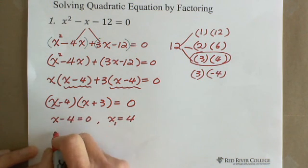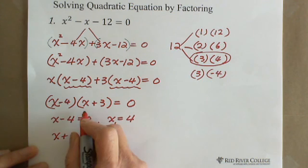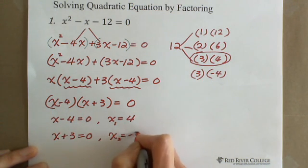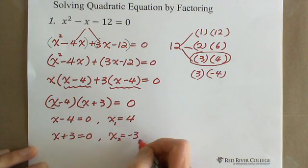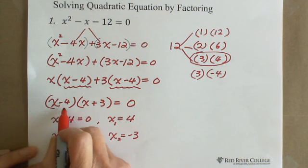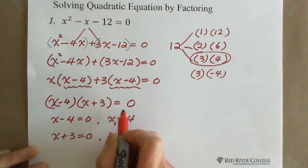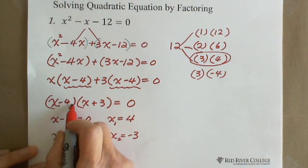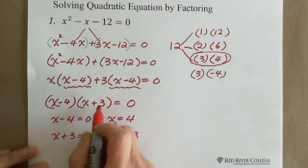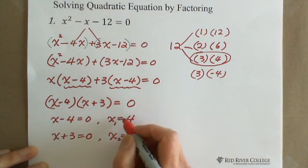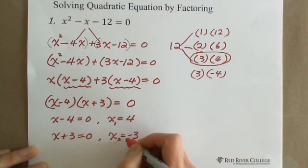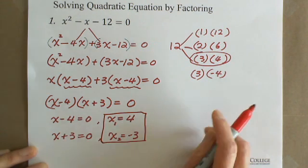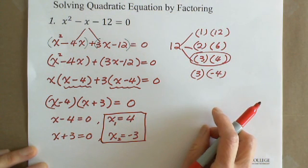The other factor gives us x plus 3 equals 0, so x equals negative 3. We can verify: negative 3 plus 3 equals 0, and negative 3 minus 4 equals negative 7. Negative 7 multiplied by 0 equals 0. So x₁ equals 4 and x₂ equals negative 3 are both solutions of this quadratic equation solved by factoring.